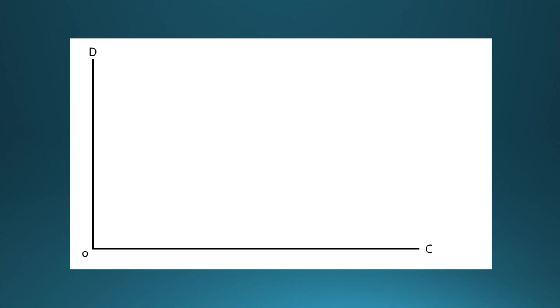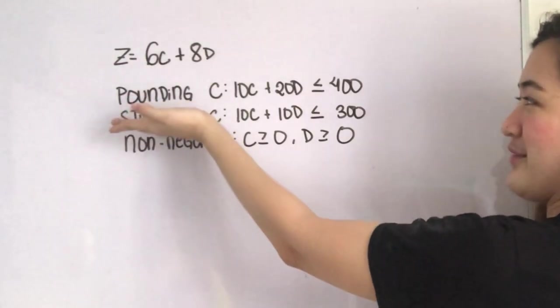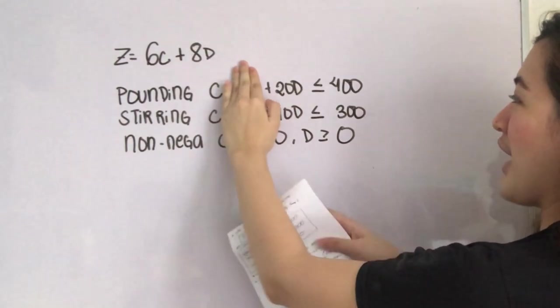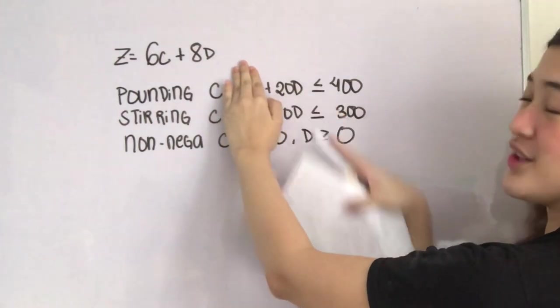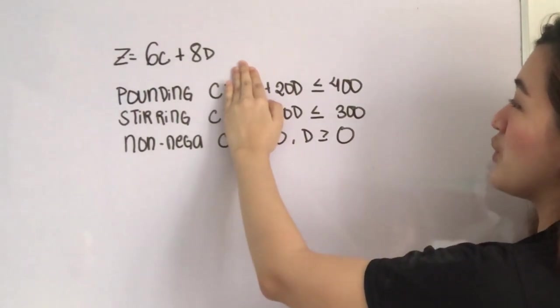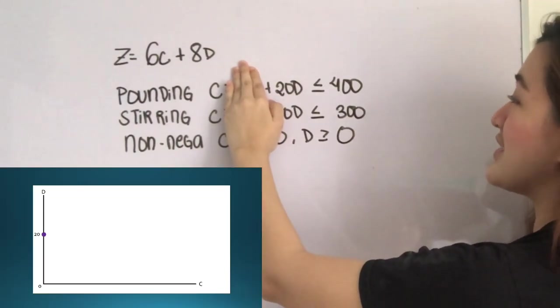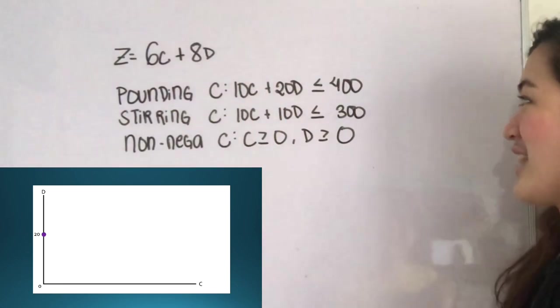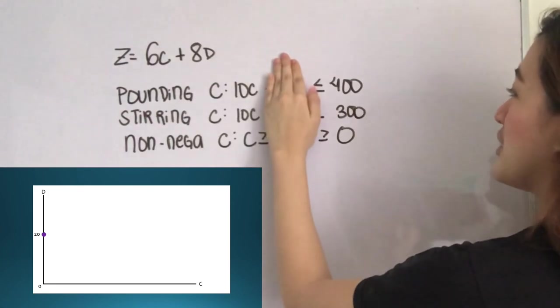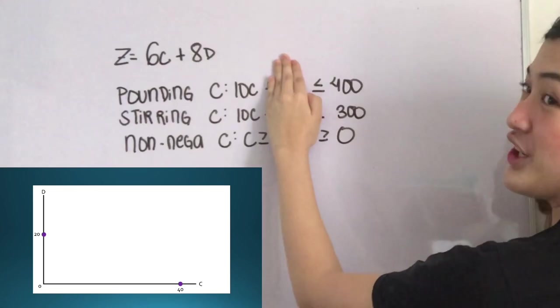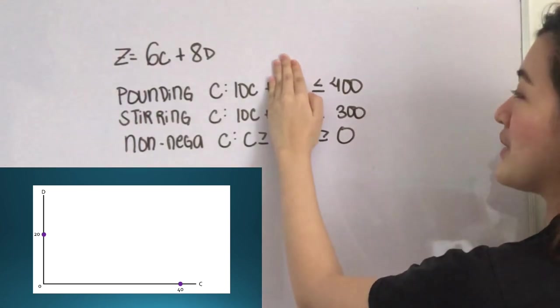For pounding, let's cover the 10C. We will have 20D less than or equal to 400, and with that we will have D is less than or equal to 20. And then next, what if we have no D? We will have 10C is less than or equal to 400, and that will be C is less than or equal to 40. That's for pounding.